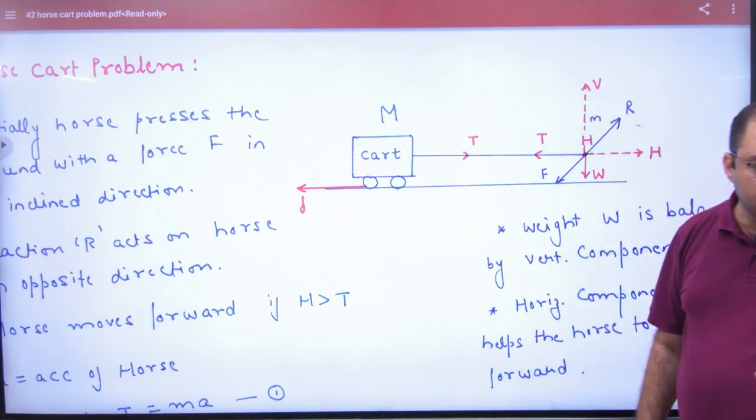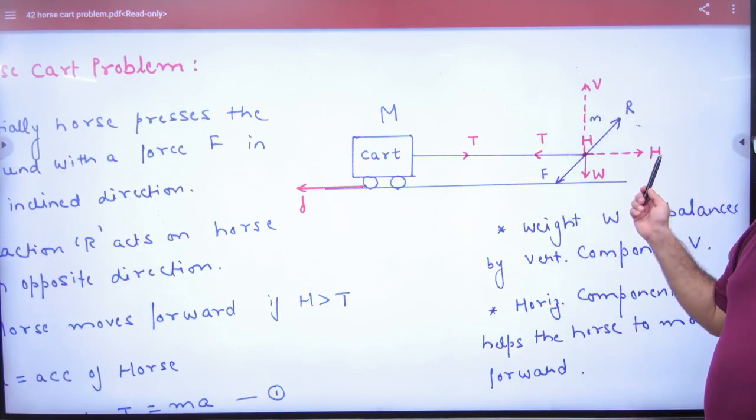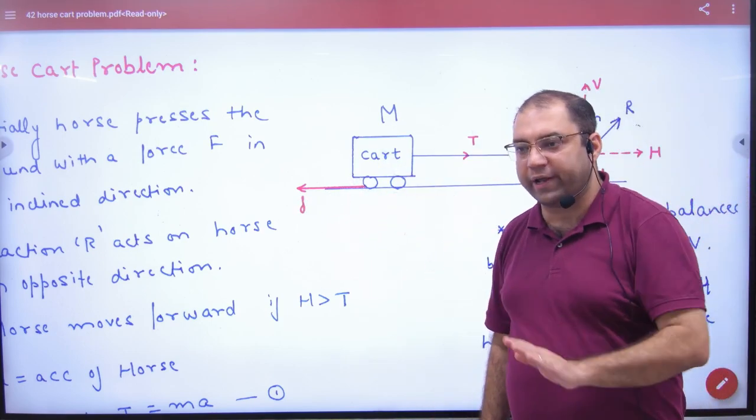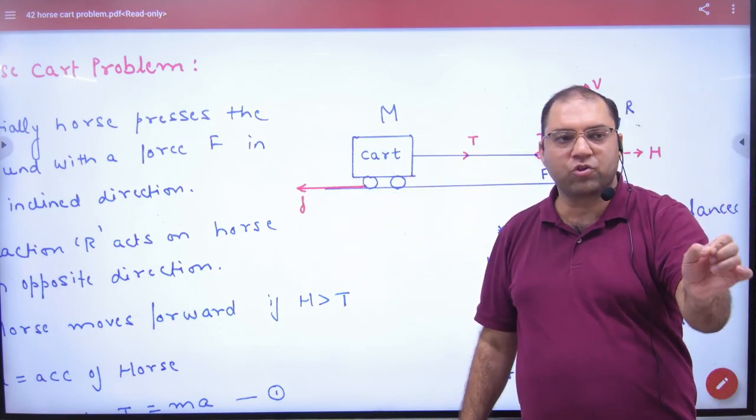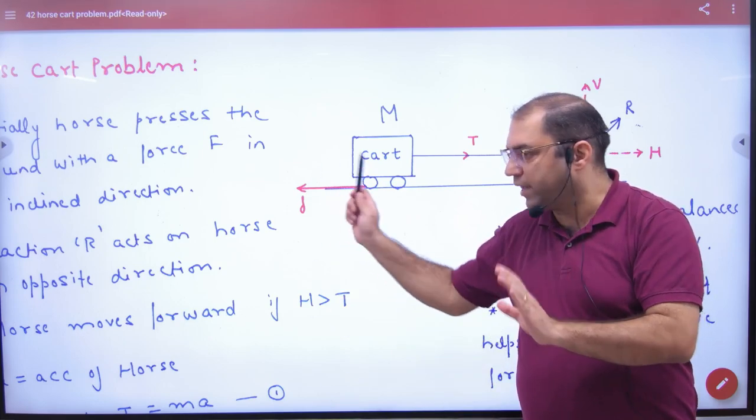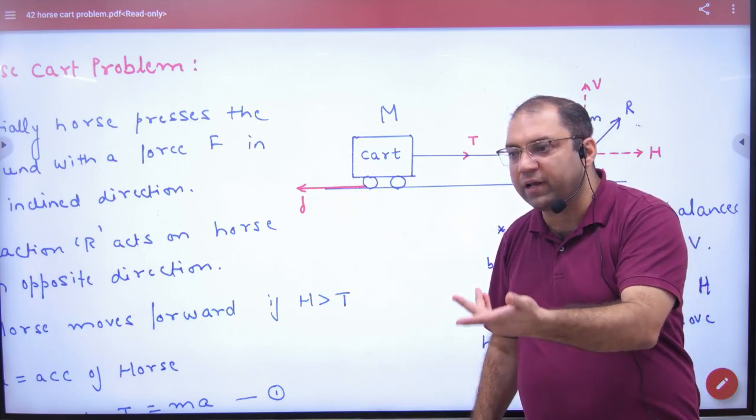So theoretically, it's very clear: if the horizontal force is bigger than friction, then the horse will be able to move forward. So H should be greater than F. But how will we prove this mathematically?